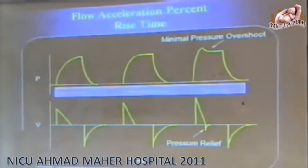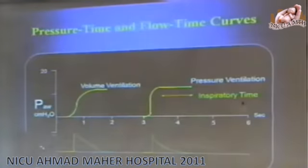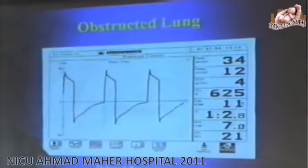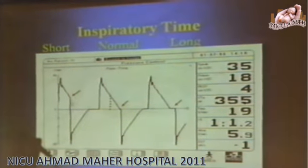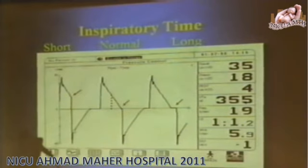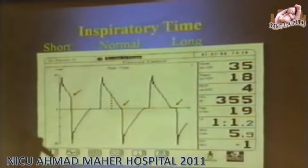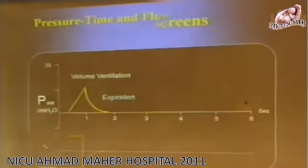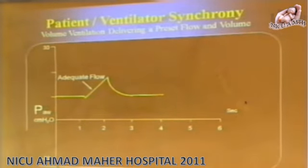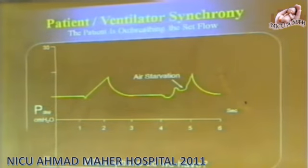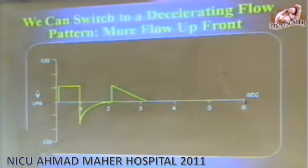In PSV mode there is no inspiratory pause, because the breath is terminated once flow reaches 15–20% of peak. So the flow in and flow out curve will end before flow reaches zero — the valve opens early and allows air out. There is no inspiratory hold, which is normal for people breathing with healthy lungs. PSV is good for a baby who is close to extubation with good compliance and doing well. Assist control and SIMV are better modes for sick babies.